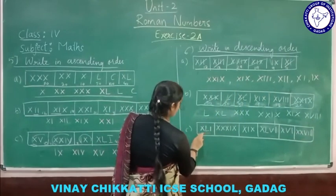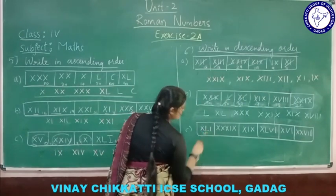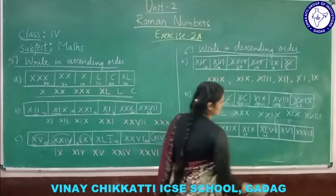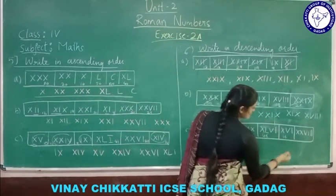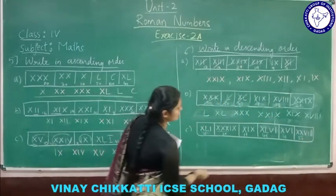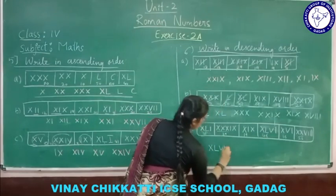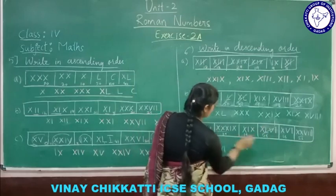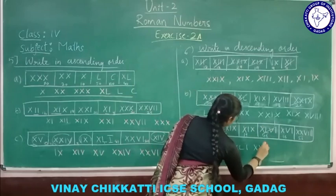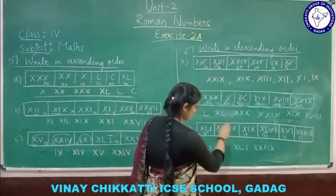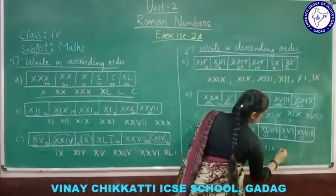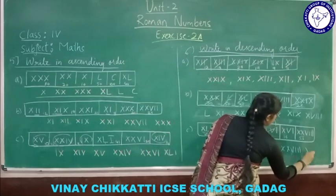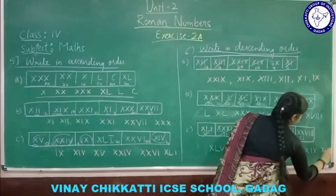Next set: X L I is 41, X X X I X is 39, X I X is 19, X L V I is 46, X V I is 16, and X X V I I I is 28. Find the greatest: 46 (X L V I) first, then 41 (X L I), then 39 (X X X I X), then 28 (X X V I I I), then 19, then 16.